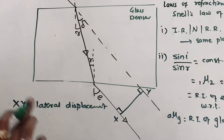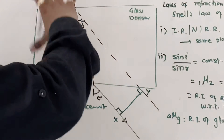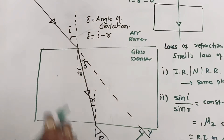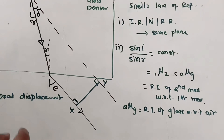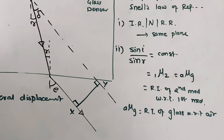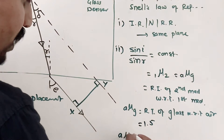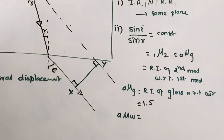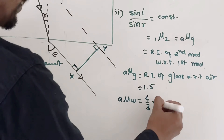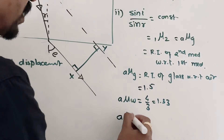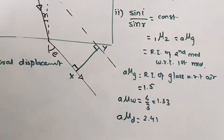Lateral displacement depends on three factors: angle of incidence, thickness of the glass slab, and refractive index. The refractive index represents the optical density of that medium with respect to the reference medium. It is constant for a given pair of media. For example, a-mu-g is 1.5, a-mu-w (refractive index of water with respect to air) is 4/3 which is 1.33, and for diamond a-mu-d is 2.41.